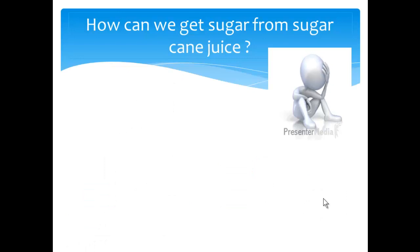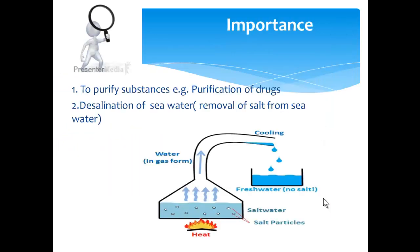How can we get sugar from sugar cane juice? Which process we will use? Crystallization process. Importance: to purify substances such as purification of drugs. Second point is desalination of sea water. What is desalination? Removal of salt from sea water.